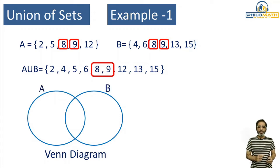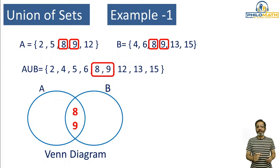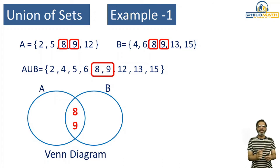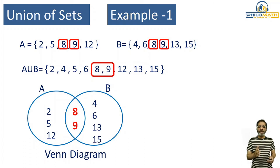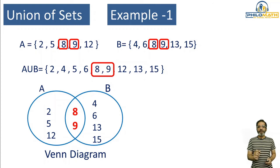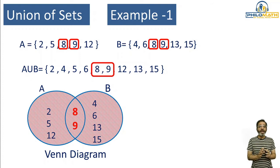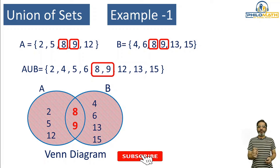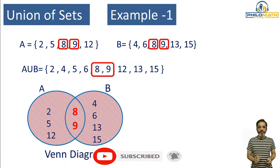I'll give the name of the two sets A and B. The part where the two circles are intersecting will be filled by the two elements 8 and 9 — these are the common elements of A and B. Then I write down the remaining elements of A, that is 2, 5, and 12, and the remaining elements of B, that is 4, 6, 13, and 15. Since we are finding A union B, we have to shade the entire Venn diagram — union means everything. This is the Venn diagram for A union B.